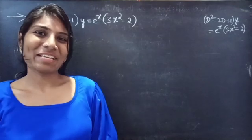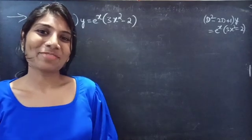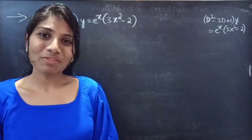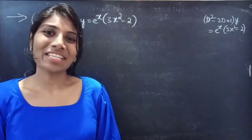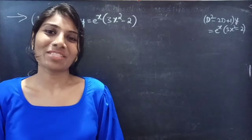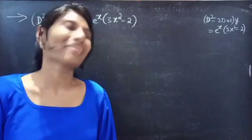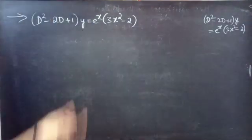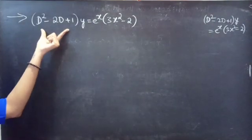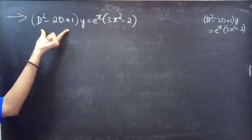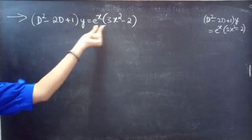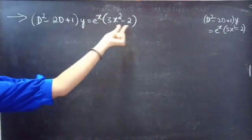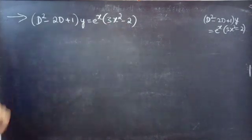Hello everyone, this is your Kalitana here. In this video, we are going to solve a differential equation from higher order linear differential equations. Let's get going. Problem: Solve (D² - 2D + 1)y = e^x · (3x² - 2).